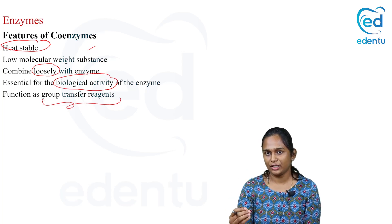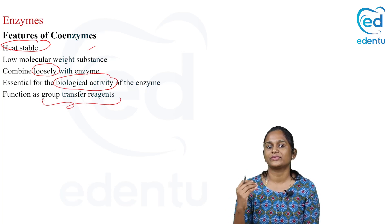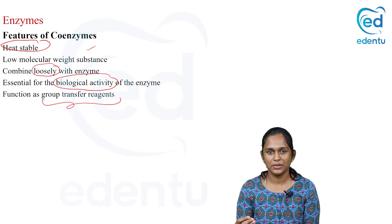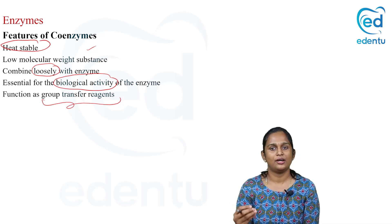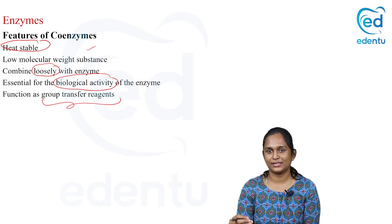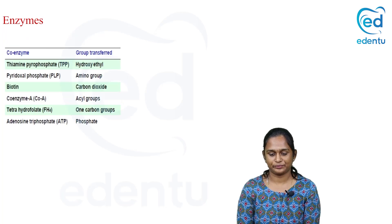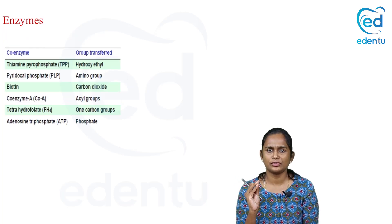Coenzymes are loosely bound, heat stable, and low molecular weight substances found along with the enzymes. Examples of coenzymes — you can remember that all the water-soluble vitamins in the vitamin B complex act as coenzymes.